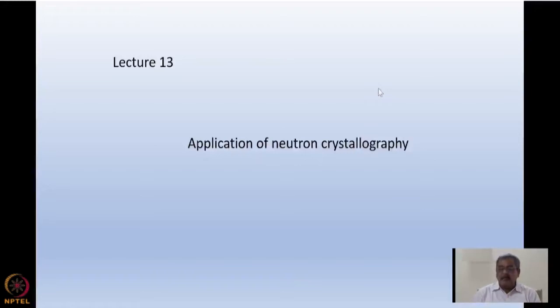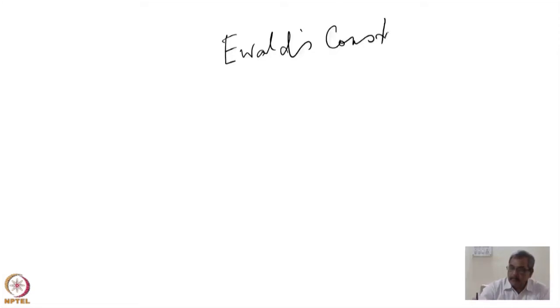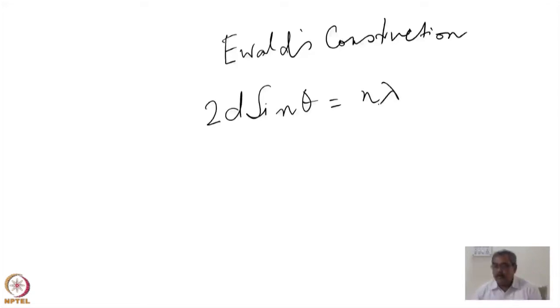Before I start with the lecture proper, I should repeat a little bit of what I said in the previous lecture, because I think it is important for us to understand the various constructions and techniques we use to determine the position of the Bragg peaks. In the last lecture I discussed something called Ewald's construction. Possibly many of you are familiar with this, but we always go with the formula for Bragg diffraction.